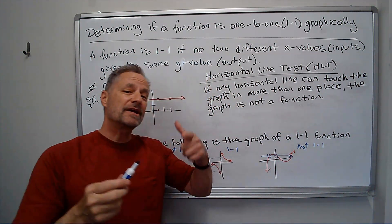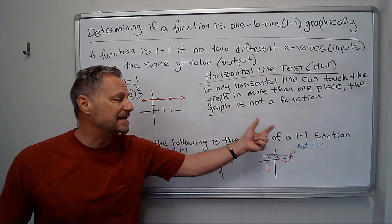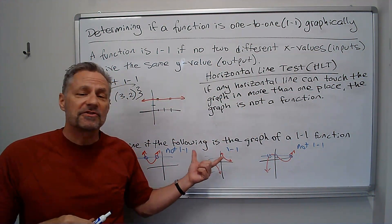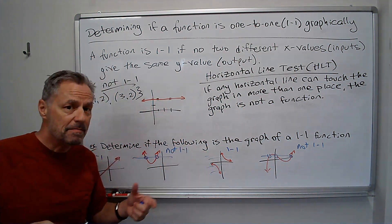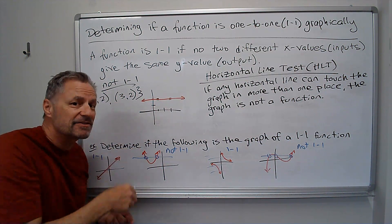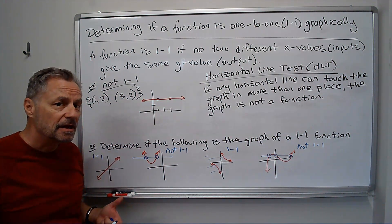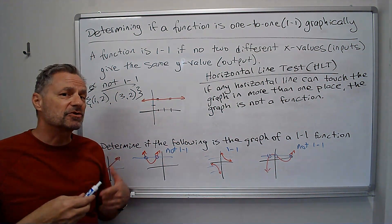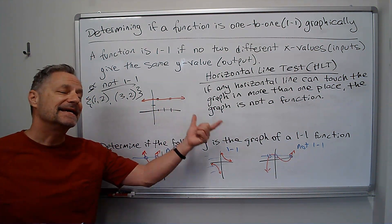So the horizontal line test is a very simple test to determine if the graph is one-to-one. Remember, if it's a one-to-one function, it has to be a function first. It had to pass the vertical line test to be a function. But if it also passes the horizontal line test, it's a one-to-one function.